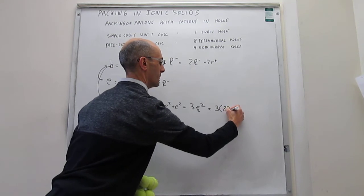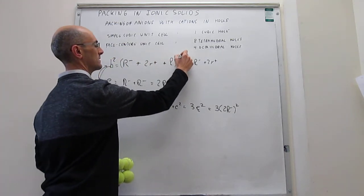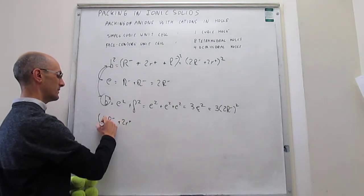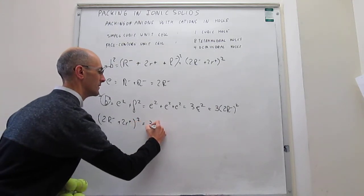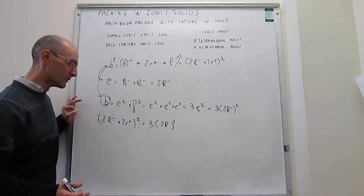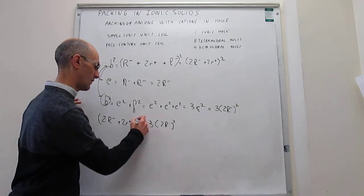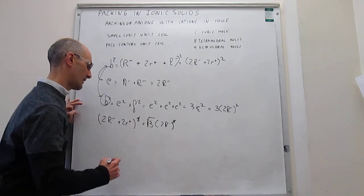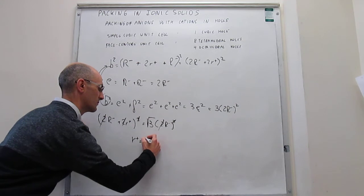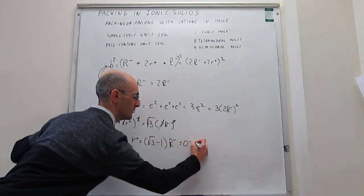Putting these two things together, let's square this to show that these two things have to be exactly the same. So (2r⁻ + 2r⁺)², that is your body diagonal squared, is equal to 3 × (2r⁻)², which is the body diagonal squared as well. We simply have a little bit of algebra to go through. We can remove the squares by taking the square root, and then solve for r⁺. Notice that all the 2's cancel out, so you will have r⁺ = (√3 − 1) r⁻, which is exactly the same thing as 0.732 r⁻.